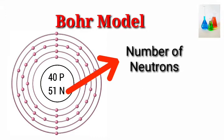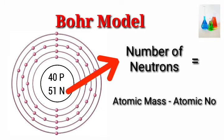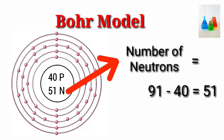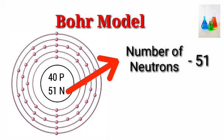Number of neutrons equals atomic mass minus atomic number: 91 minus 40 equals 51. Number of neutrons: 51.